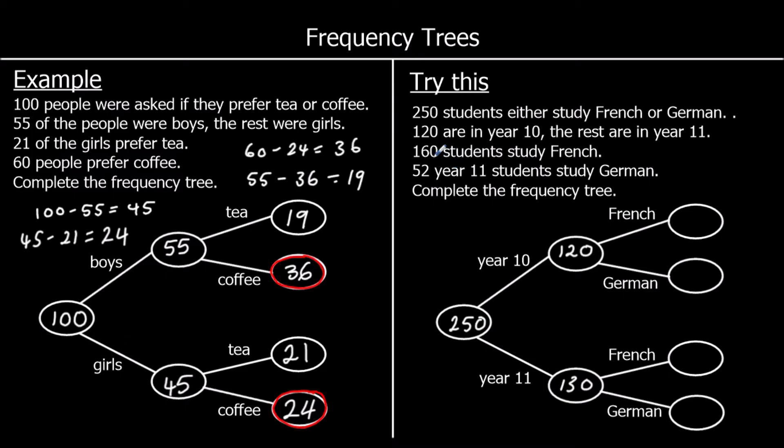We're told 160 students study French. So these two boxes have to add up to 160. 52 year 11 students study German. So 52 year 11 German. So we can work out year 11 French.